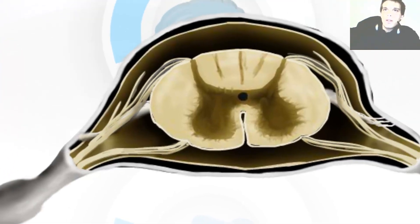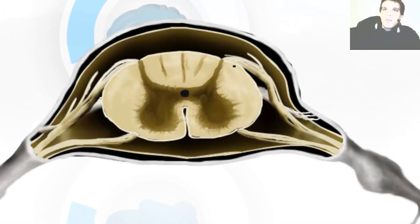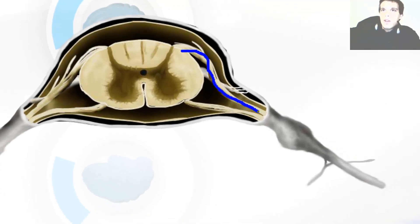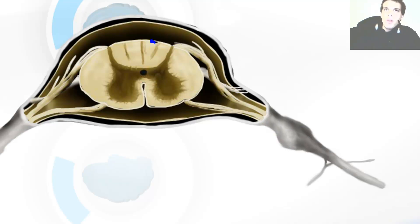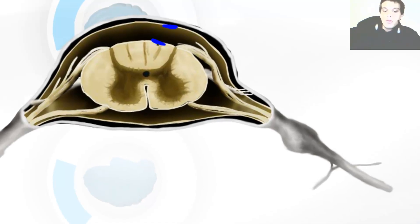The posterior root fibers travel this way with the cell body located at the spinal ganglion, then continue further. The anterior root does not have a cell body in the ganglion, and it joins the posterior root right after the spinal ganglion — they are separated up until that point. The spinal ganglion is created by the posterior root. The pia mater and arachnoid mater here create the endoneurium of the peripheral nerve, while the dura mater becomes the perineurium and epineurium.